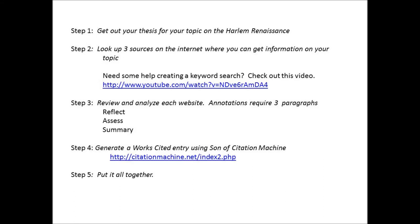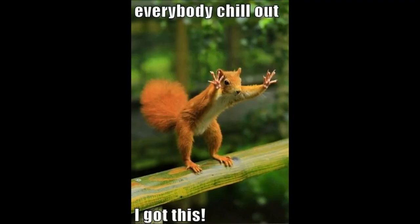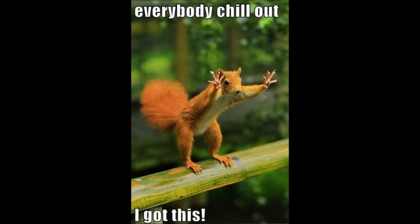So let's review — five steps total. First, get out your thesis for your topic on the Harlem Renaissance; we did that in the very beginning of the course. Second, find three sources on the internet where you can get information on your topic — if you need help, there's a video included in the help guide. Third, annotate your source: write a summary, an assessment, and a reflection paragraph, and do it three times on three different sources. Fourth, generate a works cited entry using Son of Citation Machine. And then step five, put it all together.